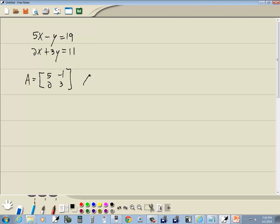Our X matrix, that's uppercase X, is our variables, which are x and y. And the numbers on the right side is our B matrix, so 19, 11.